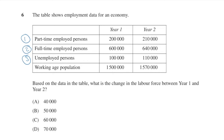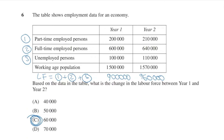So here are a few more past HSC questions to give you a bit more practice. In 2012's question 6, we're asked to calculate the change in size of the labor force between years 1 and 2. The definition of the labor force is unemployed plus employed — we also include the part-time employed. By adding this up, we'll find that the labor force was 900,000 in year 1 and 960,000 in year 2. This means that it's grown by 60,000 and the answer is C.